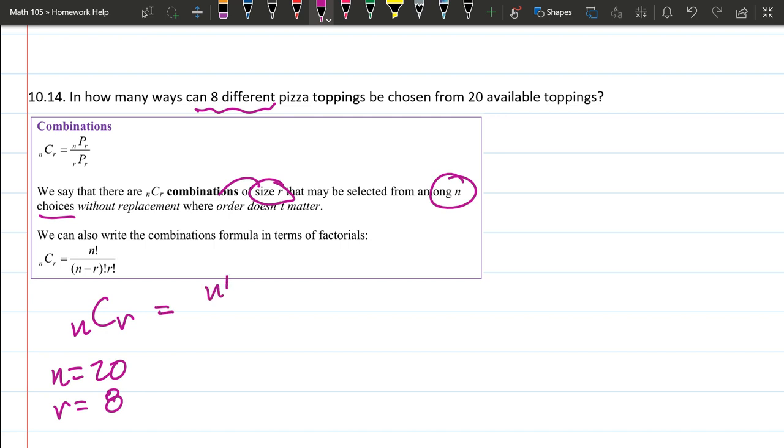So we have our nCr right here. So I'll just rewrite nCr as n factorial divided by (n minus r) factorial times r factorial. And we have all these numbers here.